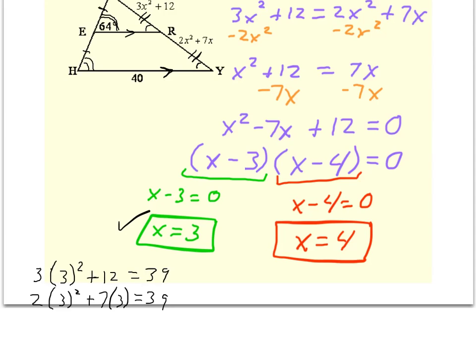Let's check x equals 4 as well. Both of those make that length 60. Now since both of these sides are positive, it is possible that x is either 3 or 4. So we have two answers in this case, 3 or 4.